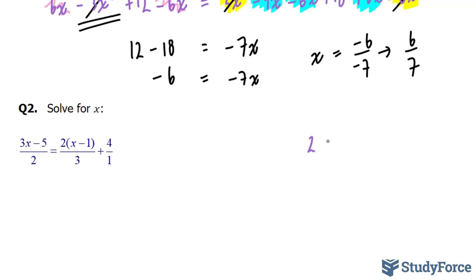If we do that, we end up with 6. And what this 6 will do is get rid of these denominators once we multiply the whole equation by 6. Let me show you what I mean. If I multiply 6 by this term right here, 6 times 4 over 1 is 24.